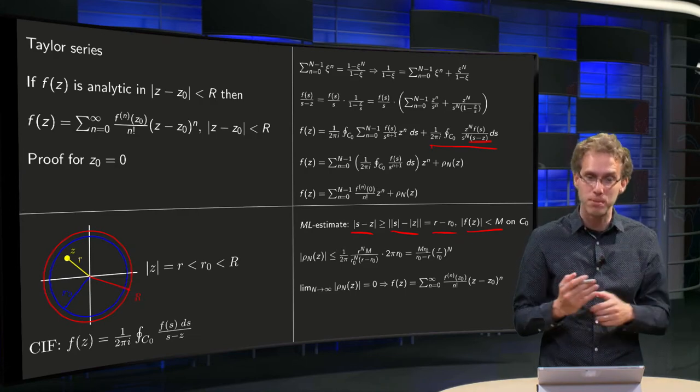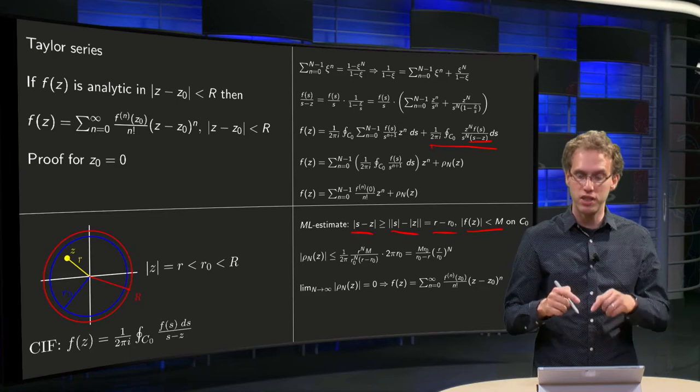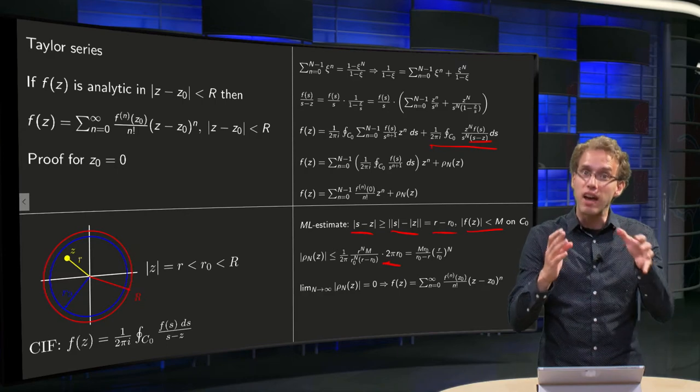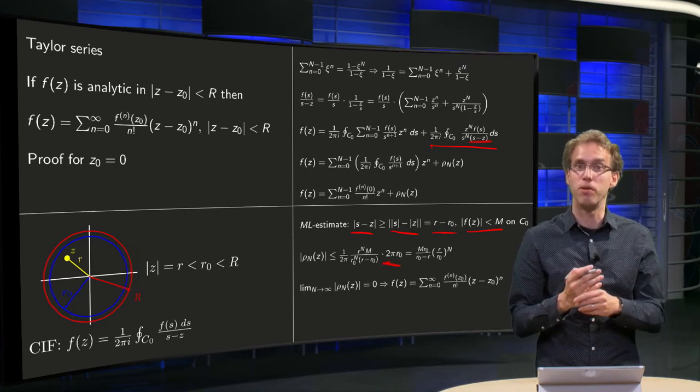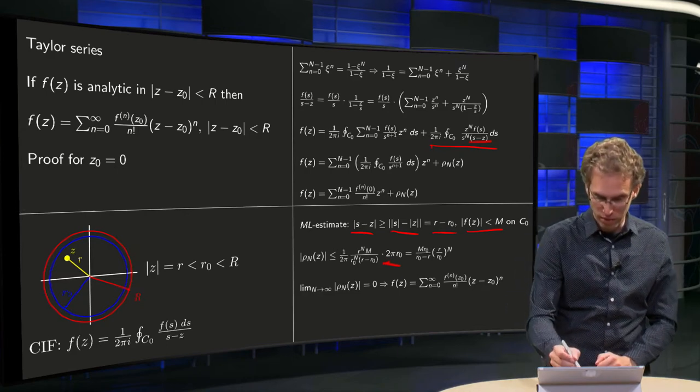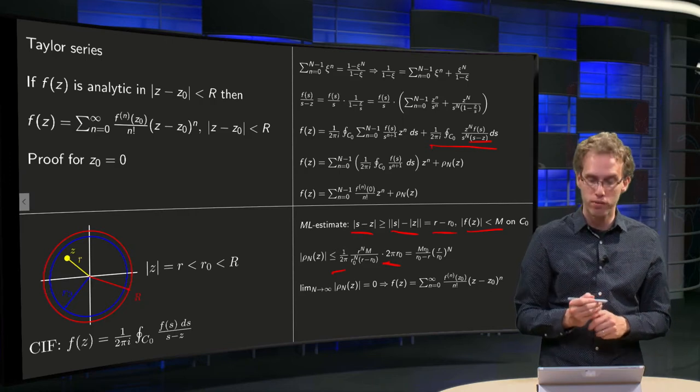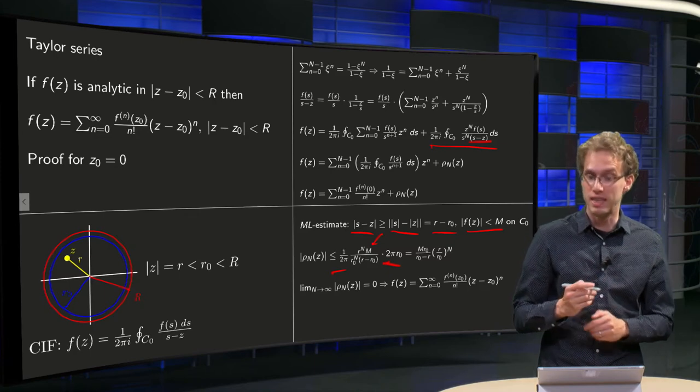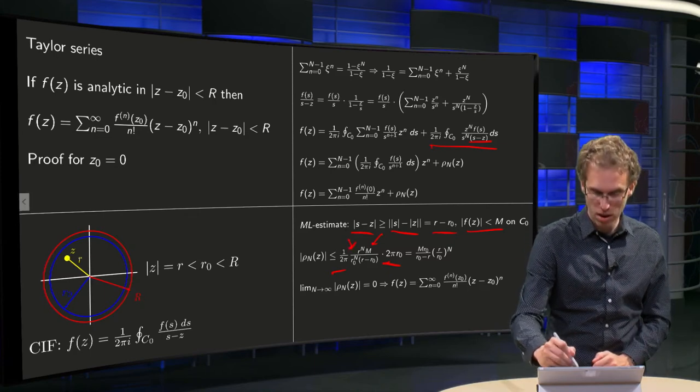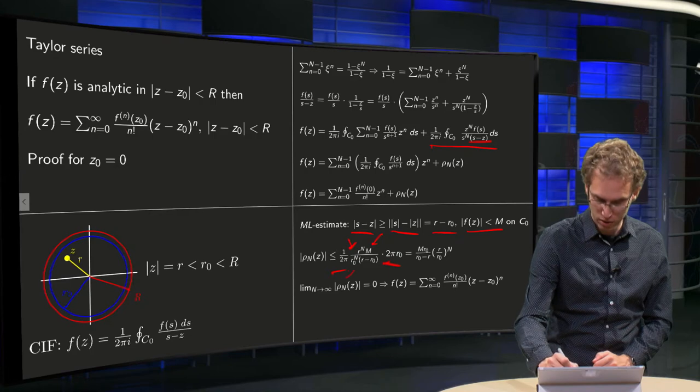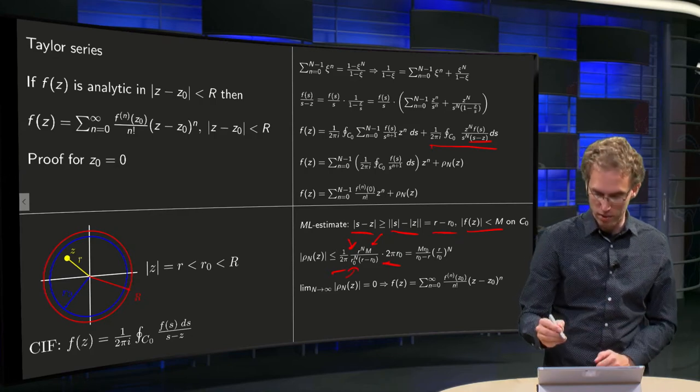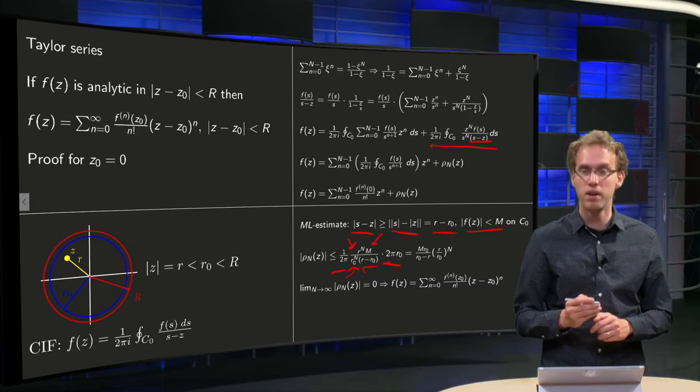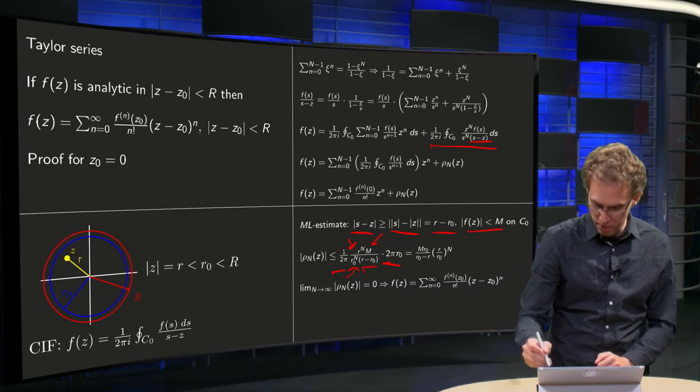So we can estimate our remainder. It is equal to the length of c₀, so that is 2π r₀, times the maximum of the integrand. We have a factor of 1 over 2π of course. The f is bounded by M, the norm of z is capital R, norm of s equals r₀, and we have estimated 1 over s minus z with r₀ minus r.